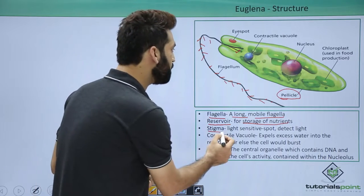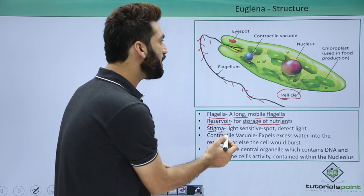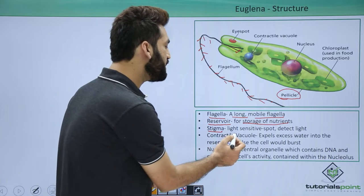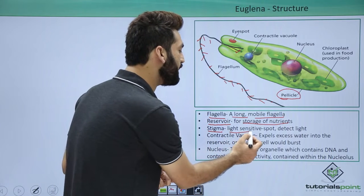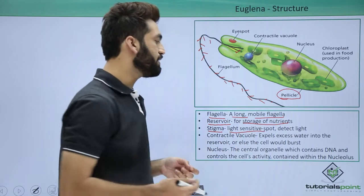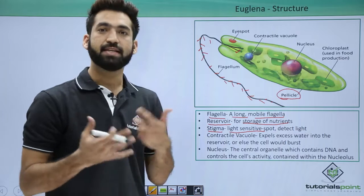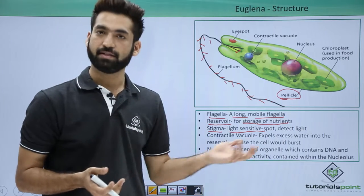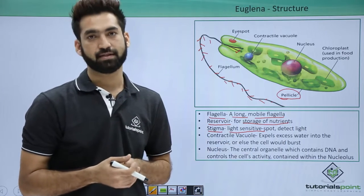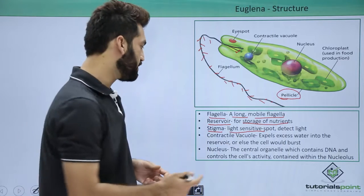They have a stigma. The stigma is present to detect light — it is a light-sensitive spot. It detects light and has a presence of astaxanthin pigment.